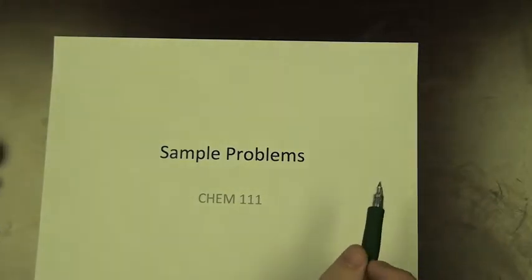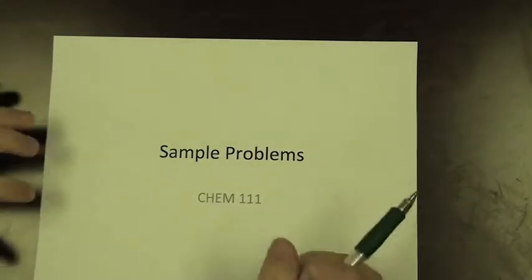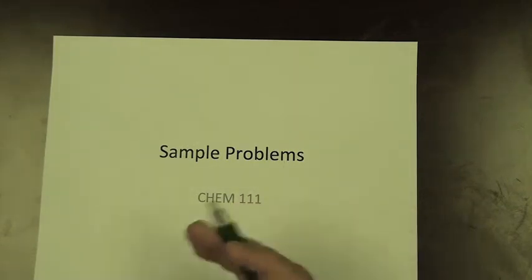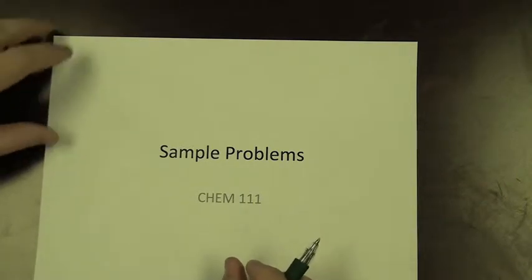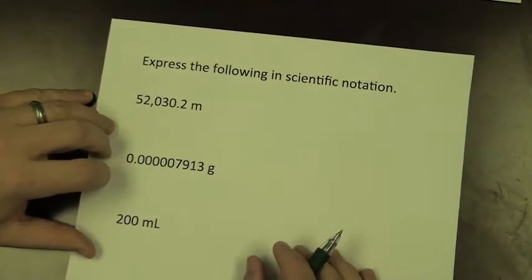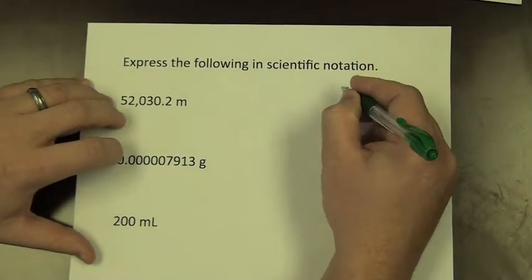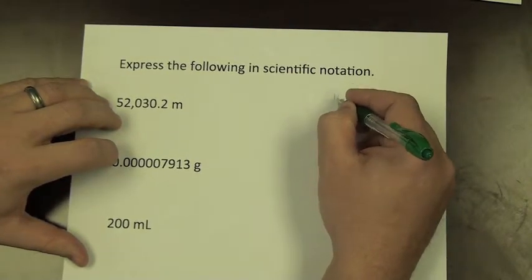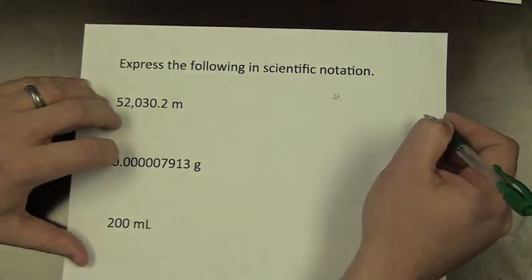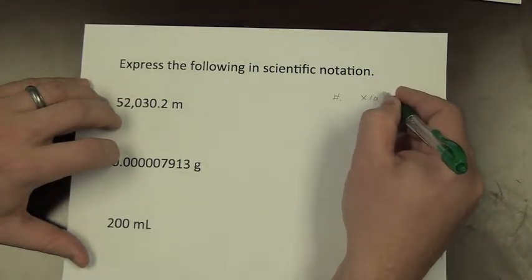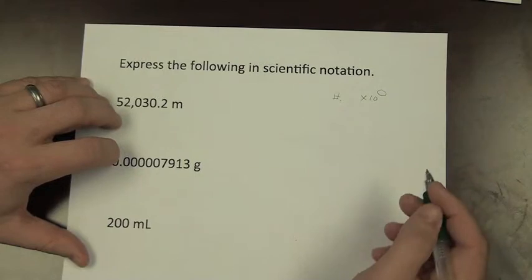We're going to do some sample problems covering scientific notation and then unit conversion using dimensional analysis, including some density calculations. Scientific notation has the formula of a number with one digit in front of the decimal, times 10 to some other value.